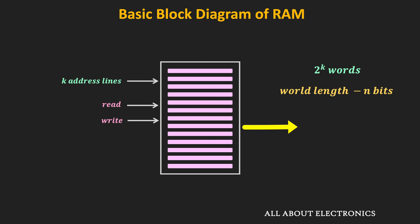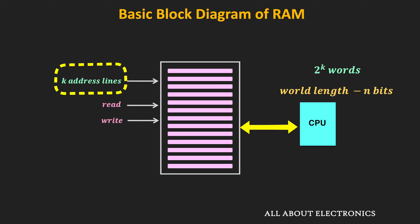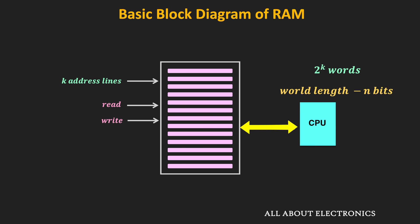During the read operation, data from the RAM will be fetched and sent as output towards the CPU. In case of the write operation from the CPU, data will come towards the RAM and be stored in it. The address on the address line decides which location in the RAM the data will be written to or read from. To read or write data in the RAM, we need to apply the control signal, a specific address on the address line, as well as the data input in the specific order. In the next video, we will see how these read and write operations are performed. But this is the basic block diagram of the RAM.